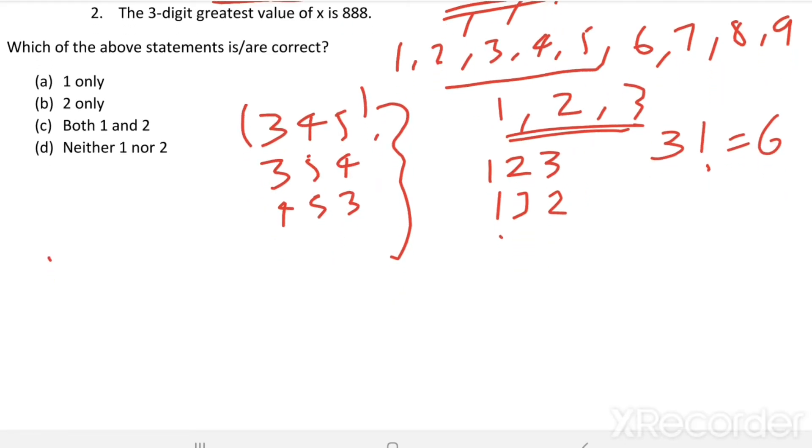Then, summing this, we get value of X. 1, 2, 3. 1, 3, 2. Then, 2, 1, 3. 2, 3, 1. Then, 3, 2, 1. 3, 1, 2. So, these are the 6 numbers possible by these 3 digits.